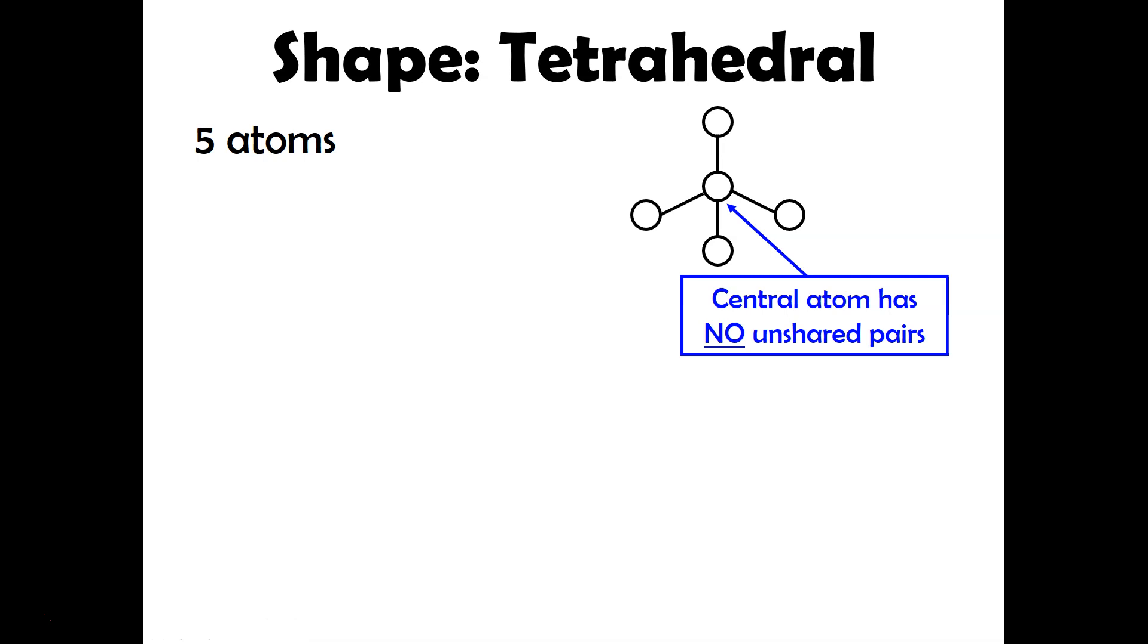Our shape for tetrahedral, I always think of tetris. So hopefully if you're thinking about tetris, you're thinking about four. And so in this case, we'll have five atoms. And then we'll have the central atom attached to four other atoms. So that's where we're seeing the tetris or tetra come from. In the central atom, you'll expect to see no unshared pairs. Because remember, if you had an unshared pair there, then that means that that would be the pyramid shaped. But since there's no unshared pairs, this is going to be tetrahedral.